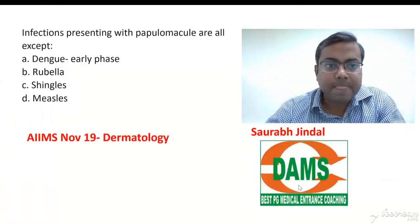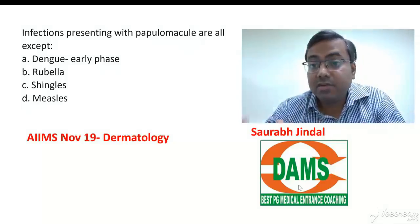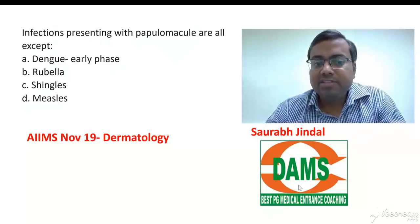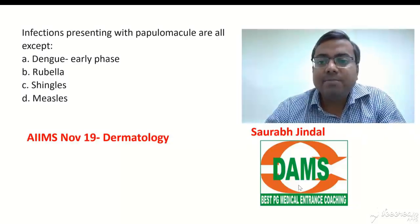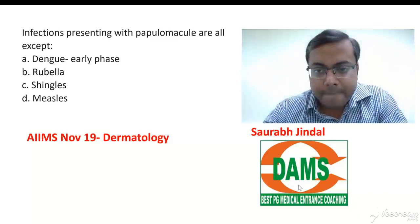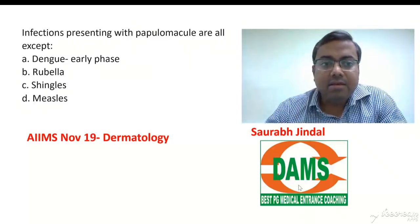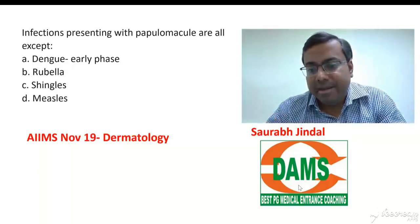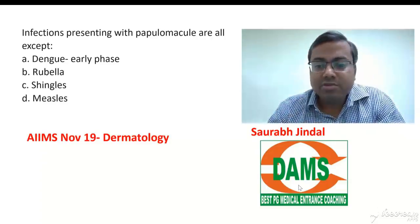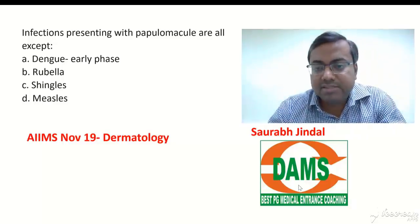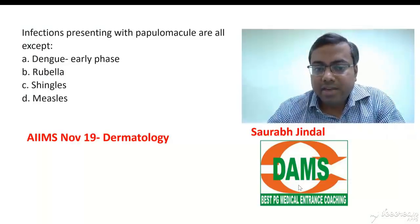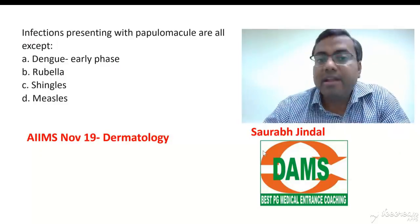One rash similar to dengue is the chikungunya rash. Both are febrile illnesses with rashes, but the key difference is that chikungunya has less bleeding — the petechial component is not as pronounced. Almost all MCQ questions will mention severe disabling joint pain for chikungunya. To summarize: dengue has more petechiae and less joint pain, chikungunya has less petechiae and more joint pain. Additionally, chikungunya can cause nasal or brown pigmentation, which is not seen in dengue.